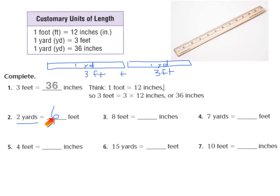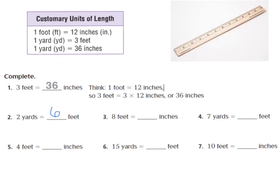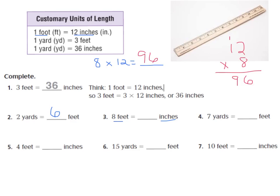For number 3, we're converting feet to inches. If I have 8 feet, how many inches will that be? I know 1 foot is equal to 12 inches, so 8 feet times 12 inches would equal how many inches? Let's multiply: 12 times 8 — 8 times 2 is 16, and 8 times 1 ten is 8 tens, plus 1 more is 9 tens. So the answer is 96 inches.